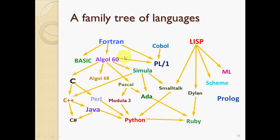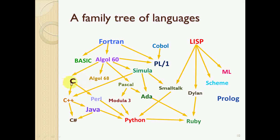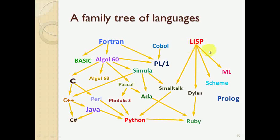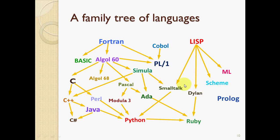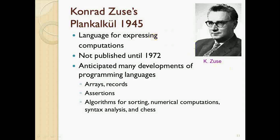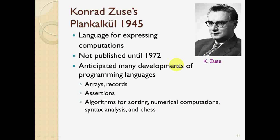This is a family tree of programming languages. FORTRAN leads to ALGOL, which divides into many branches including SIMULA, ALGOL 68, C, and then C splits into Perl and C++. LISP is another language — not very popular but with many advantages — and it divided into four parts. There is also a language for artificial intelligence computation, not published until 1972, which anticipated many developments in programming languages, using arrays, records, sorting algorithms, numerical computation, syntax analysis, and chess.